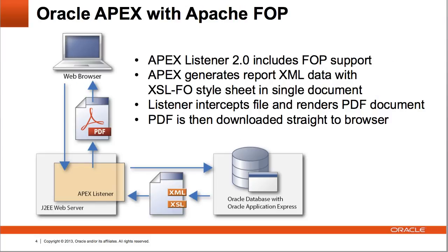What's new in APEX 4.2.2 when used with the APEX Listener 2.0 is that you can now simply select APEX Listener as your print server without setting up any additional rendering engine. In this case, APEX still generates an XML file based on your report data, but then combines the XML data with your XSLFO layout and downloads this combined document to the APEX Listener, which intercepts the document and renders it in PDF format and then sends it straight to your browser without any extra round-trip to the database.